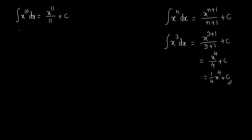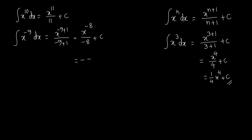Now with a negative power: integrating x to the power minus 9 with respect to x. Applying the formula, we get x to the power minus 9 plus 1 divided by minus 9 plus 1, which simplifies to x to the power minus 8 divided by minus 8 plus C. Using the indices rule, this becomes negative 1 divided by 8x to the power 8, plus C.